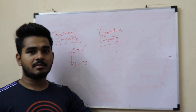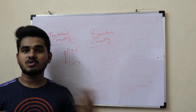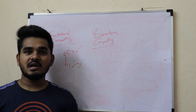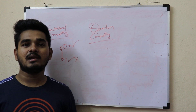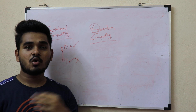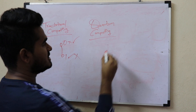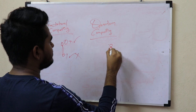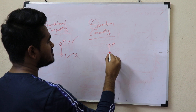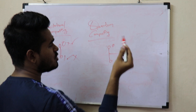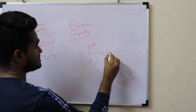Quantum computing is not like that — it can be both heads and tails at the same time. Quantum computing gives you that flexibility. It has zero and one, but it also has a new dimension called superposition.